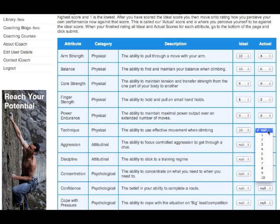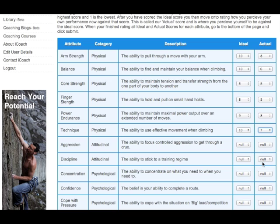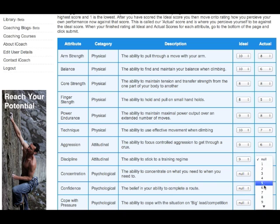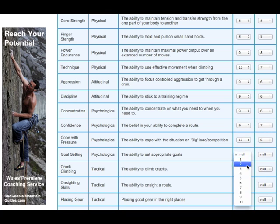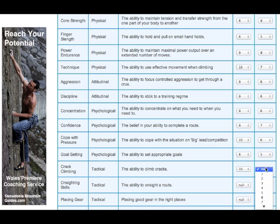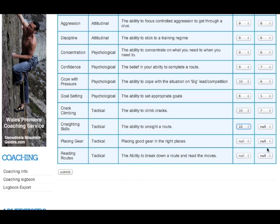What you want to do is score each attribute. For technique, you might want a 10, and your ideal climber isn't the best climber in the world — it's where you'd ideally like to be in say six to eight months. You just go down and score each one, and this might take 10 minutes for you to consider. This really is the important part of the performance profiling process, and you'll hopefully see why in a minute.